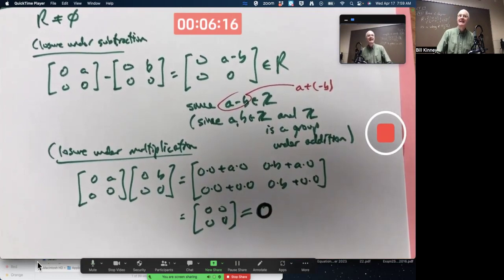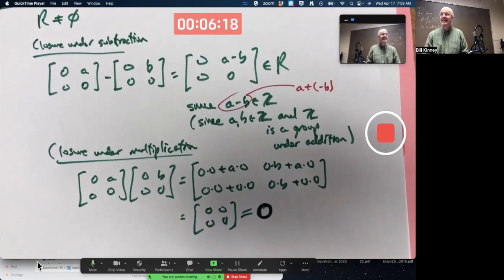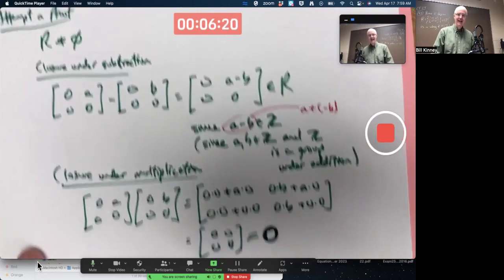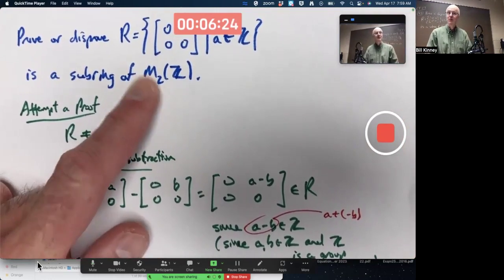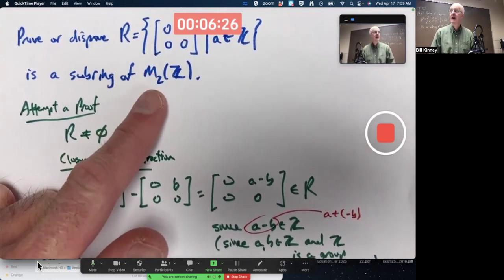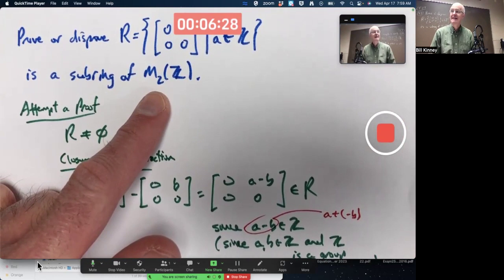That is the additive identity in this ring, M2Z. It's a ring. I mean, it's a group, a commutative group, an abelian group under addition.